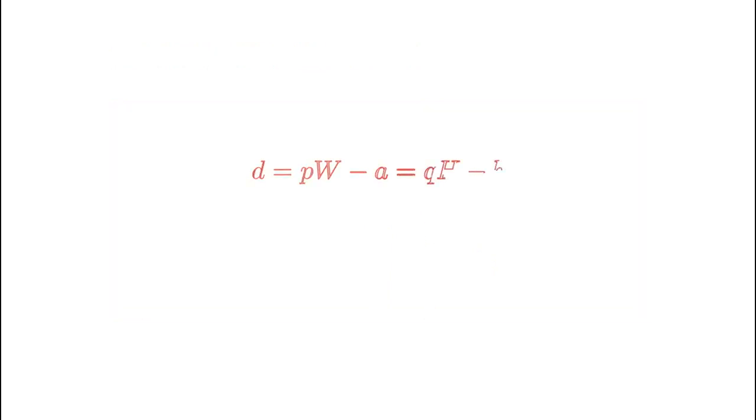So just like before, our equation this time becomes D equals P times W minus A equals Q times capital H minus B. Rearranging the terms we have P times capital W minus Q times capital H equals A minus B. This is a diophantine equation in P and Q.